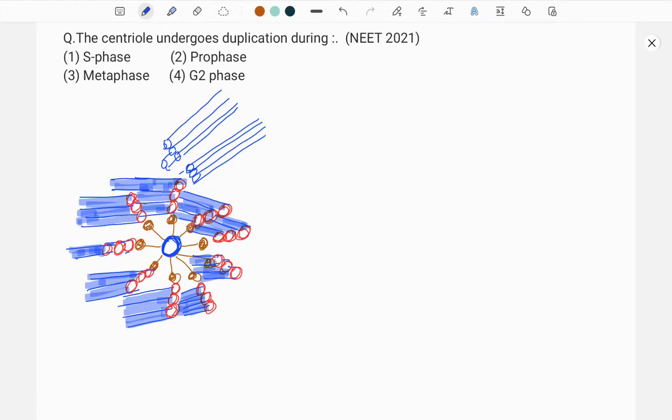Centriole is basal part of the cilia or flagella. It has got a very peculiar function. Two centrioles is equal to one centrosome.